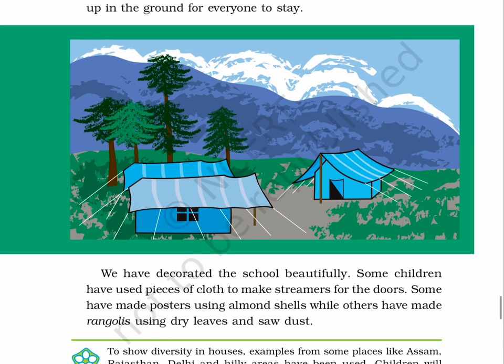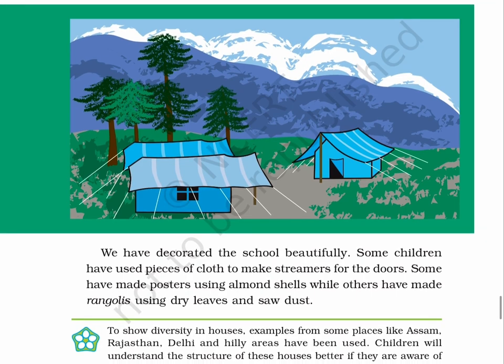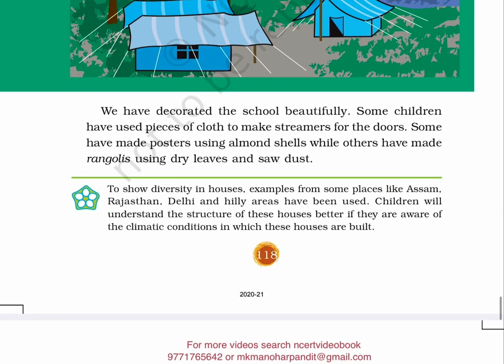There is a picture given on page No. 118. In this picture, a beautiful landscape is given and two tents are there in the ground. We have decorated the school beautifully. Some children have used pieces of cloth to make streamers for the doors. Some have made posters using almond shells, while others have made rangolis using dry leaves and sawdust.